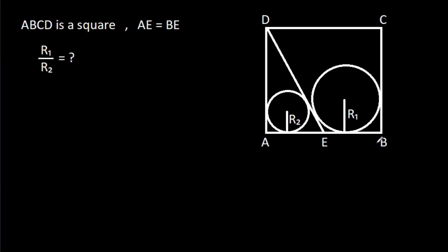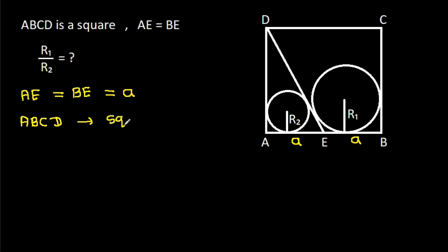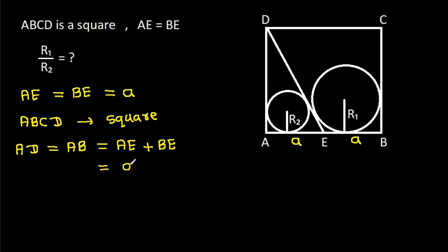In this video, we have been given that ABCD is a square and AE is equal to BE. We have to find R1 over R2. We have AE is equal to BE, so suppose AE is A and BE is A. Since ABCD is a square, AD will be equal to AB, and AB is AE plus BE, that will be A plus A, which is 2A.